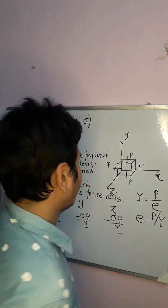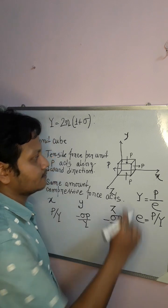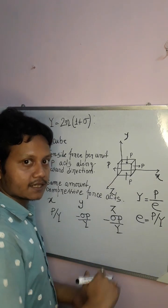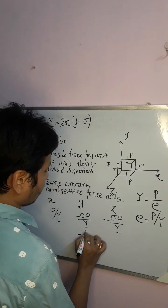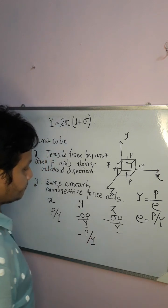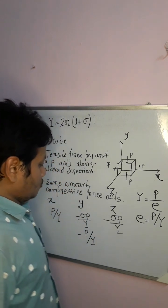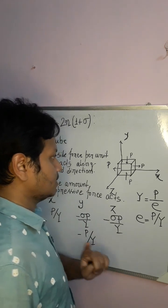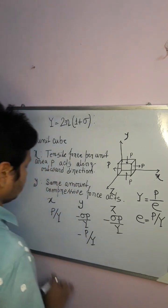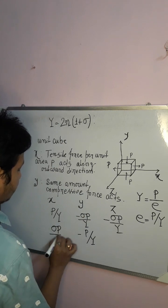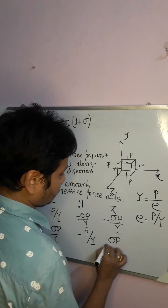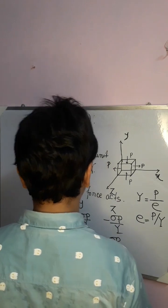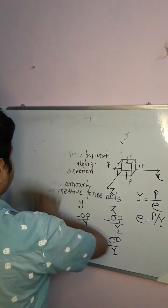Now along the y-axis, the compressive force per unit area P acts, so the strain E is minus P/Y since it is a compression. Due to this minus P/Y force along the y-axis, the corresponding x and z axes experience an extension equal to sigma times P/Y.